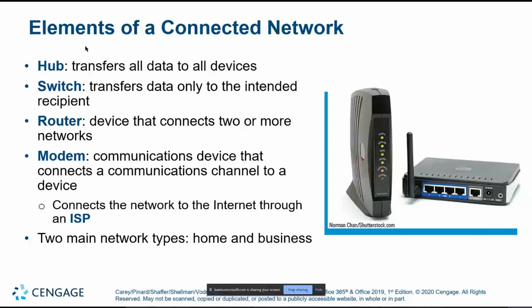A switch is more advanced and facilitates more specific communications. It can receive necessary information to communicate data to only the intended recipient — one or more. We call a single recipient unicasting; multiple recipients is multicasting. A router is a device that connects two or more networks — this is what you may have in your home to connect to the internet, connecting your home network to a wider regional network and so on.